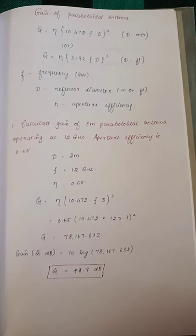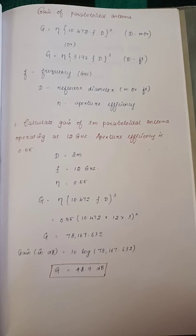Since the D value is given in meters, we are using the formula Eta into 10.472F D the whole square. In decibels, we have to take 10 to the log value. I will go from the next step to date.